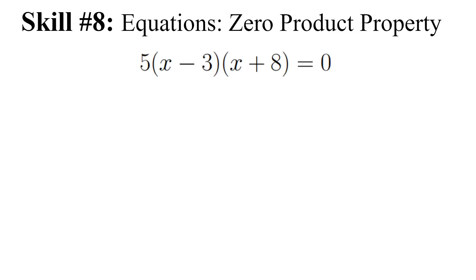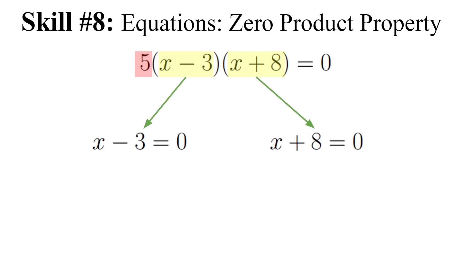For 5(x − 3)(x + 8) = 0: the constant 5 can never be zero, so ignore it. Set x − 3 = 0 to get x = 3, and set x + 8 = 0 to get x = −8. The reason I go over this carefully is that when you always do easy ones in your head, you forget the mechanics and can't handle harder questions.